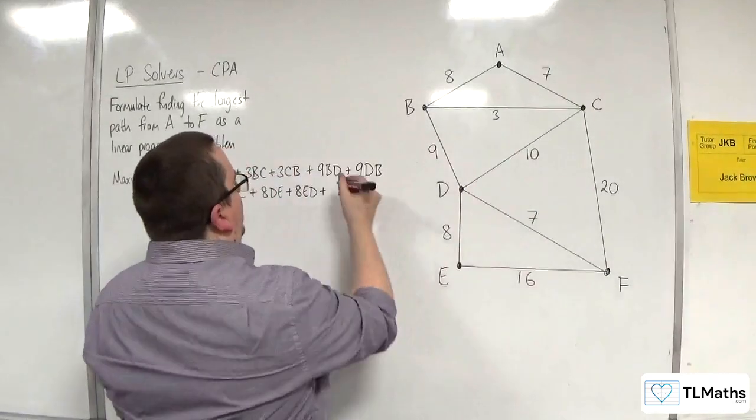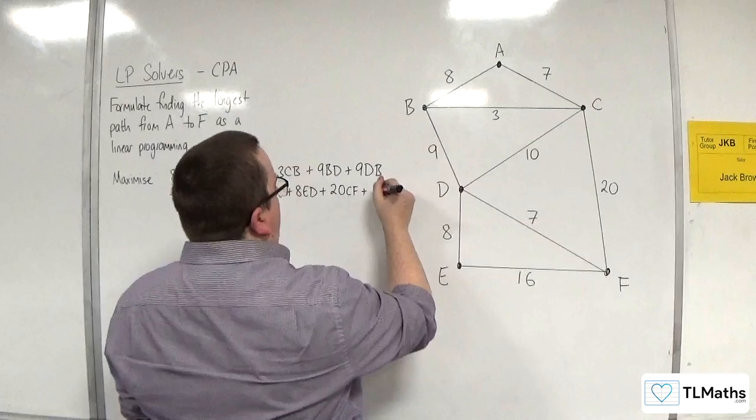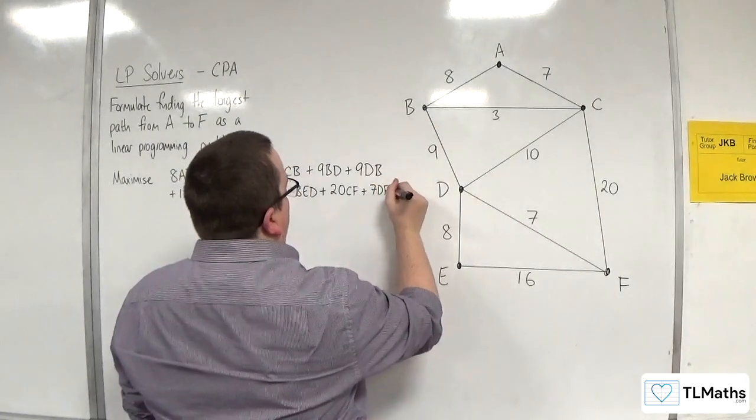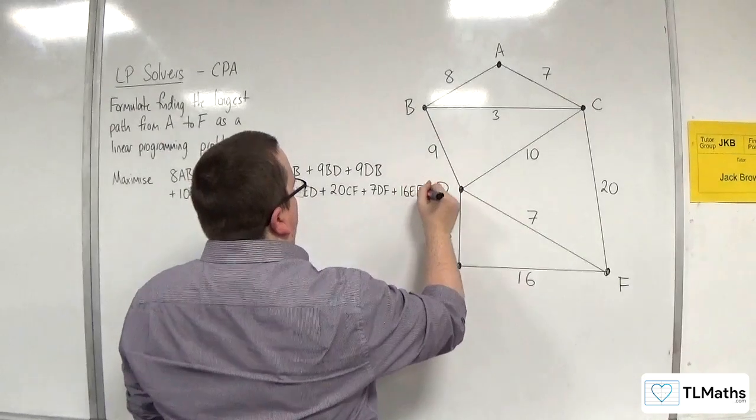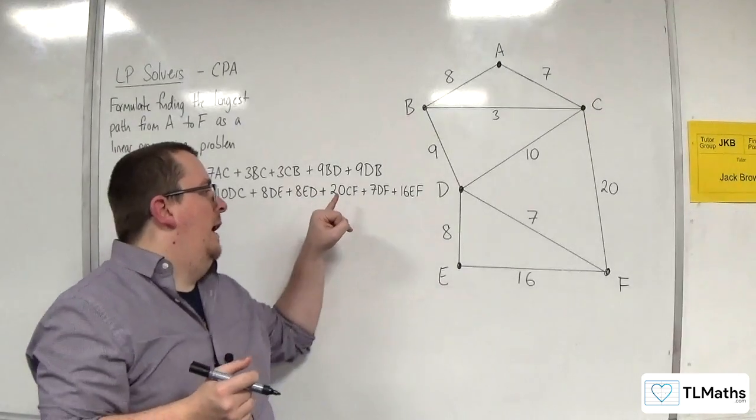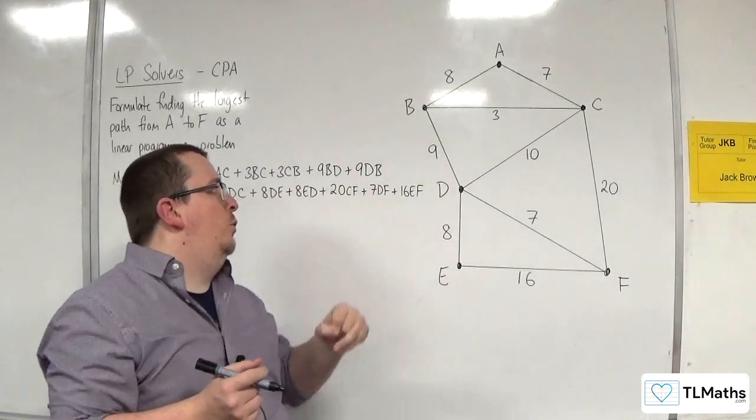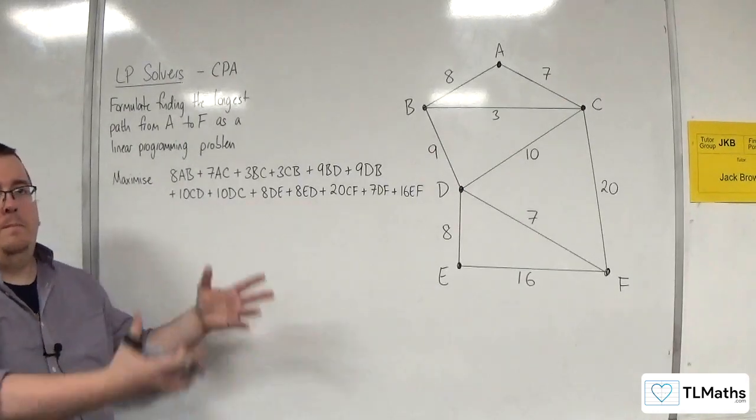We've got 20 lots of CF or 7 lots of DF or 16 lots of EF. So that's my objective function. Now I recognize that I'm not doing FC, FD, or FE, because F is the end vertex, so I'm not going back.